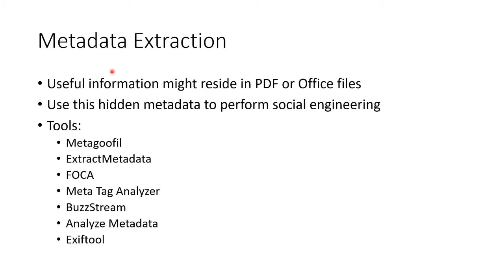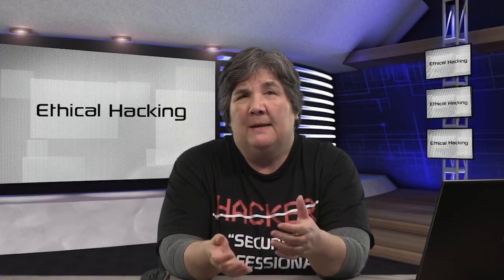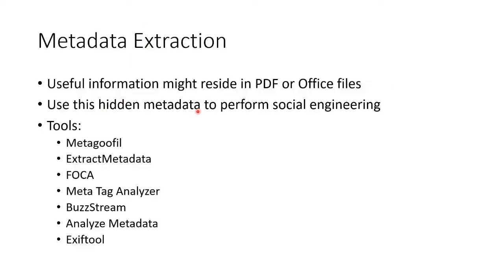Finally, extracting metadata. Metadata is data about data. For example, on your computer you have a document — right click it, go to properties, and it shows when it was created, when it was modified, who created it, how big it is, or the resolution of an image. That's all metadata. The cool thing about metadata is it includes the author, and that's a person we can socially engineer. There are plenty of tools to extract useful information hidden in a PDF or Office file — it's not the text of the file, it's the stuff in the header. Tools include MetaGooFil, FOCA, Extract Metadata, MetaTag Analyzer, BuzzStream, Analyze Metadata, and ExifTool. So that is website footprinting.